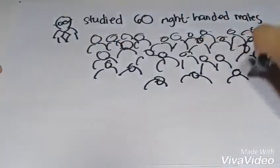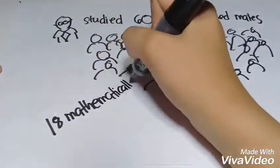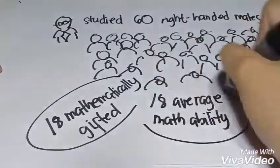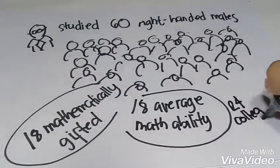The participants included 18 mathematically gifted 14-year-olds, 18 of average math ability, and 24 college students.